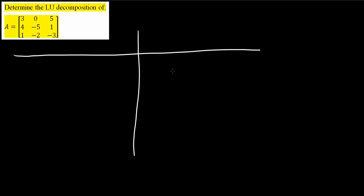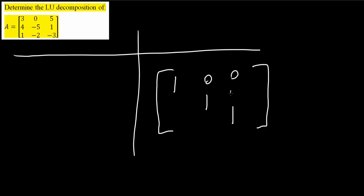So first, I will draw a table. One side will be L, and the other would be U. With L, I'm going to have a 1 across, and on the top right, we're going to have 0s. This is going to be L. These three numbers, we need to determine. And now I'll do the U matrix.